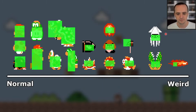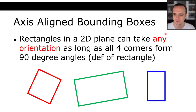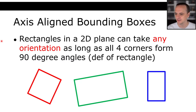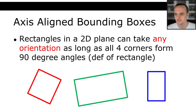Axis-aligned bounding boxes — let's talk about what AABBs are. Rectangles in a 2D plane can take any orientation. A rectangle can be rotated in any way as long as all four corners have 90 degree angles. The detecting of intersections of arbitrary rectangles can actually be kind of slow, as it may involve checking all line segments against each other.